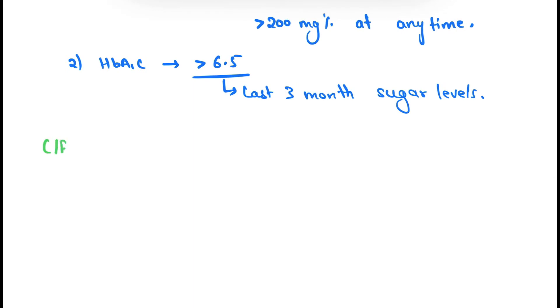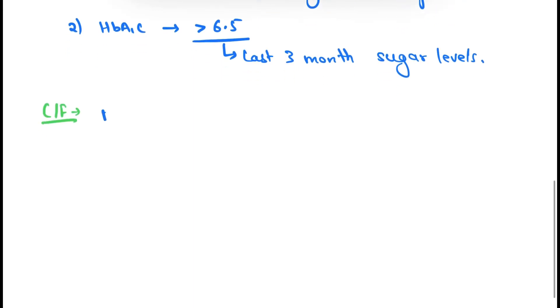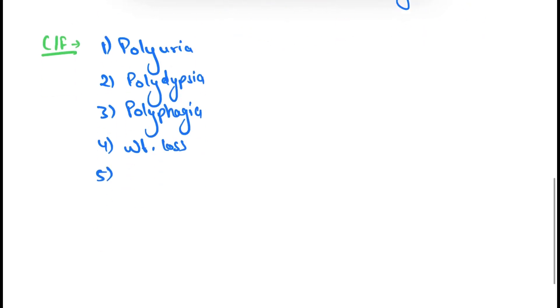Now coming to the clinical features. The main clinical features are: first, polyuria; second, polydipsia; third, polyphagia; fourth, weight loss; fifth, recurrent infections because of immunocompromised state; and sixth, postprandial blurring of vision.